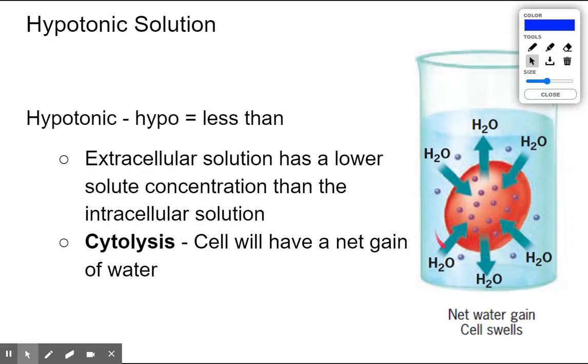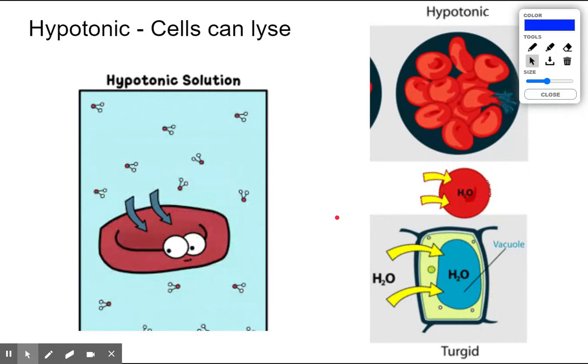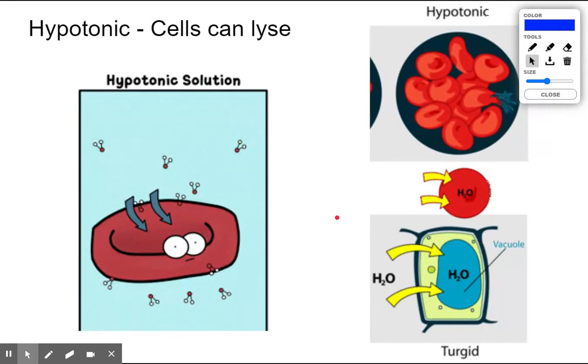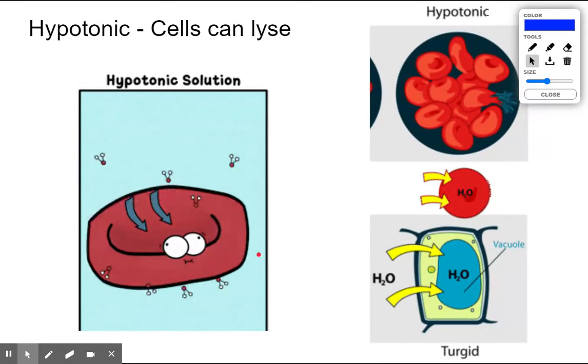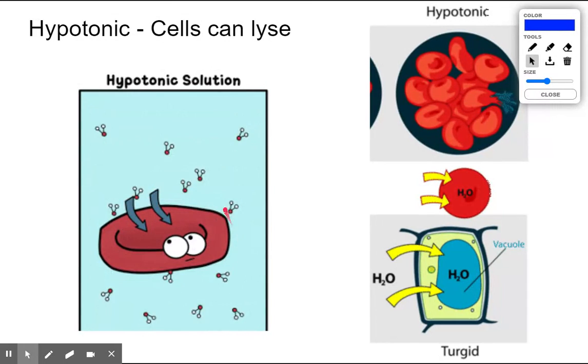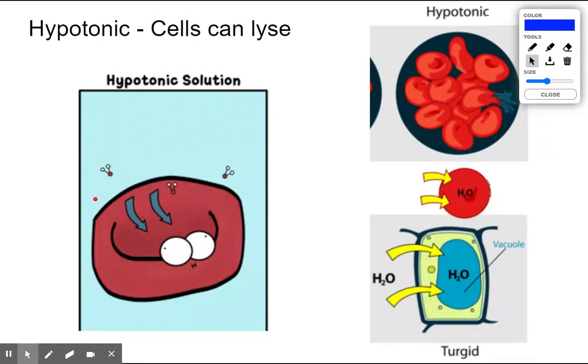Here we can see that taking place. Hypotonic causes the process called cytolysis. Cytolysis makes a hippo. Hypo hippo goes through the process of cytolysis where water goes into the cell.